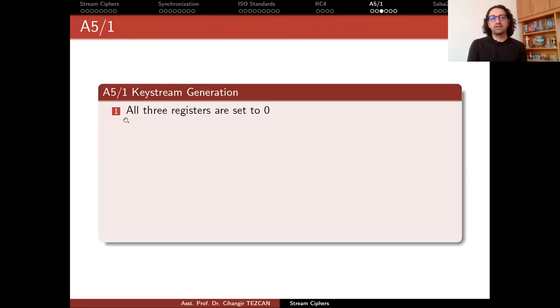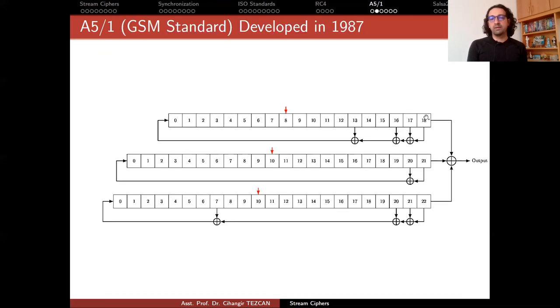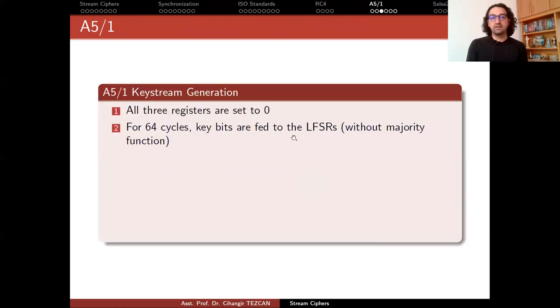Let's start how the key stream generation works. All three registers are set to zero. For 64 cycles, and remember that we have 64-bit key, key bits are fed to LFSRs. So from here, one by one, the bits are fed here, and you run it in this way. So the registers are filled with key bits.